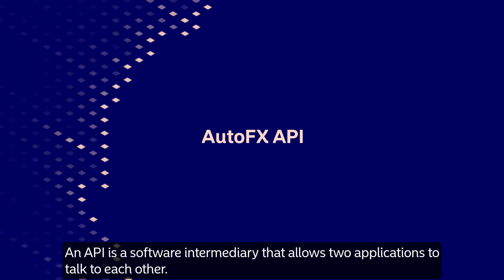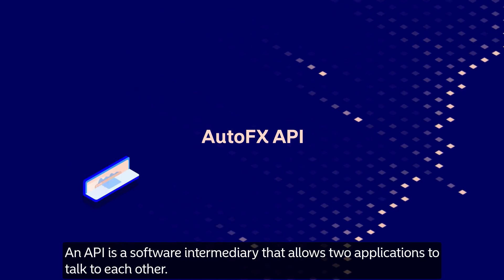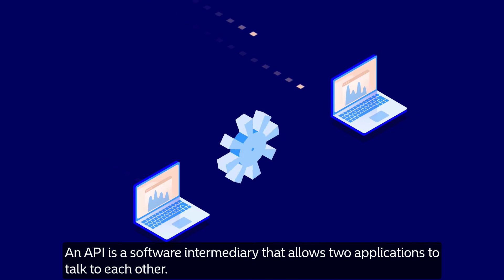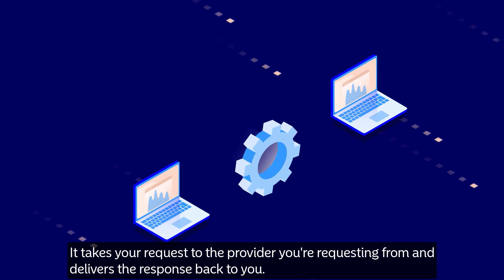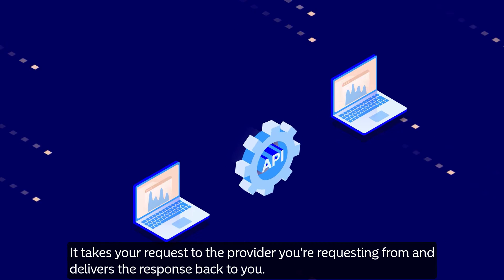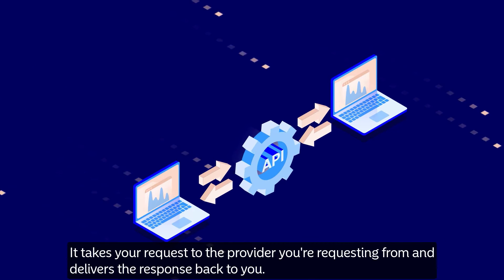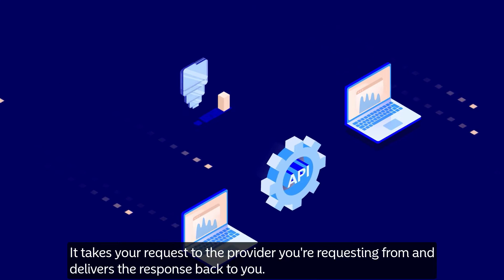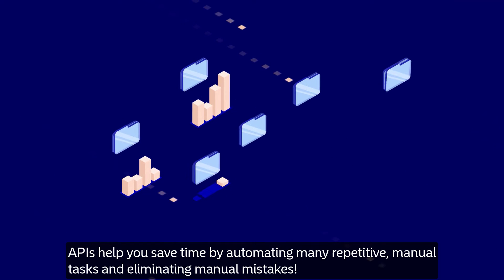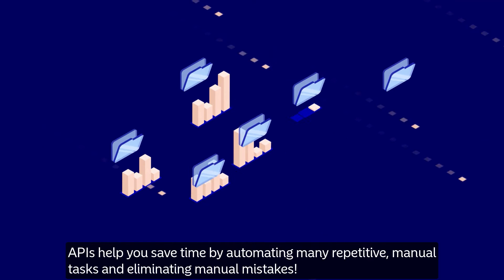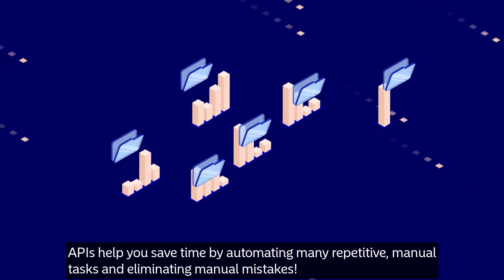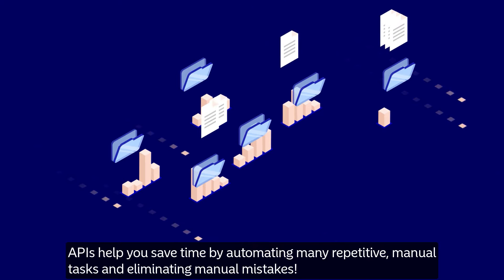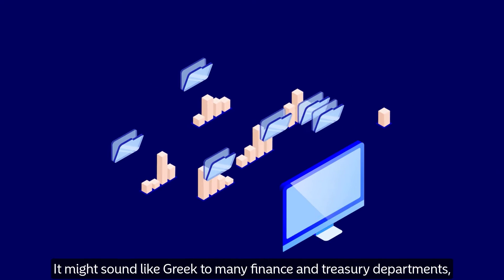An API is a software intermediary that allows two applications to talk to each other. It takes your request to the provider you're requesting from and delivers the response back to you. APIs help you save time by automating many repetitive, manual tasks and eliminating manual mistakes.